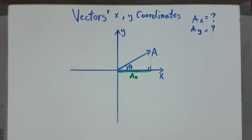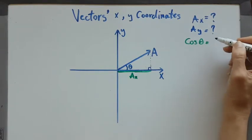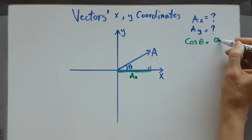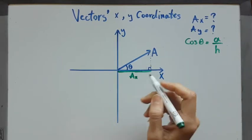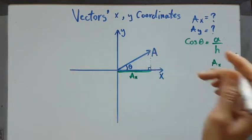I have the theta. I can see that the cosine of theta, I know cosine is adjacent over hypotenuse, right? Adjacent is ax and the hypotenuse is the length of a.